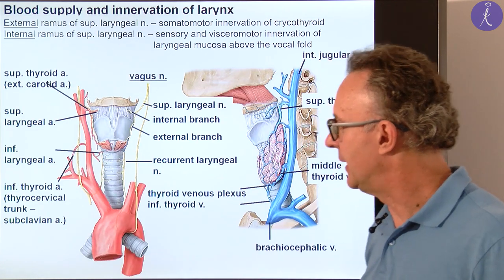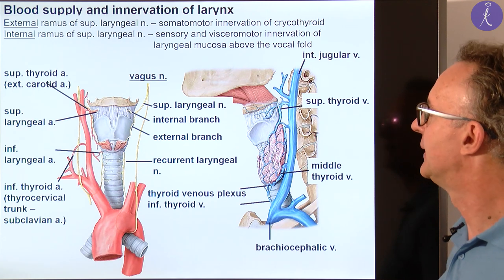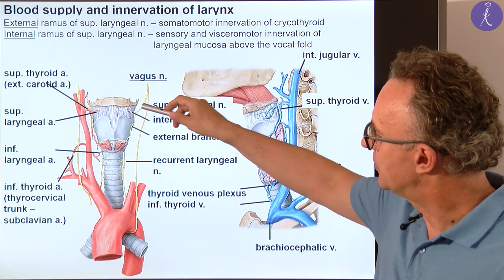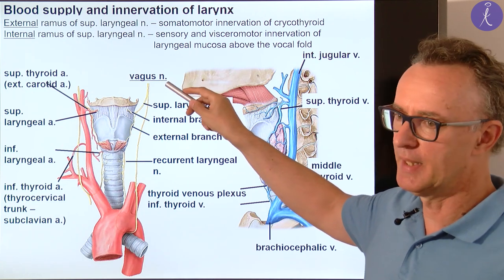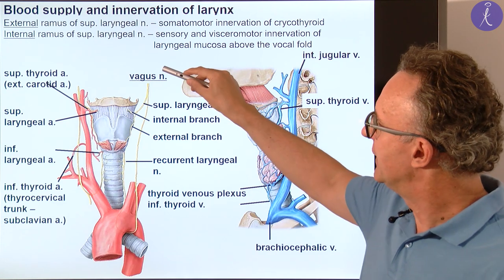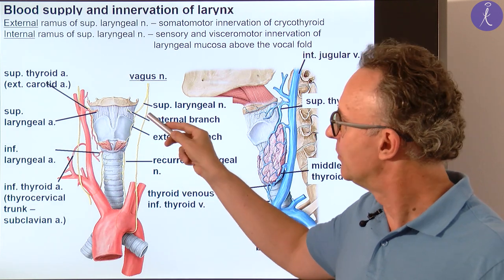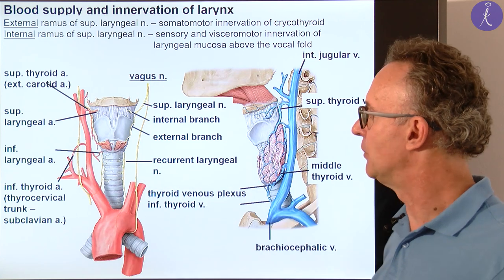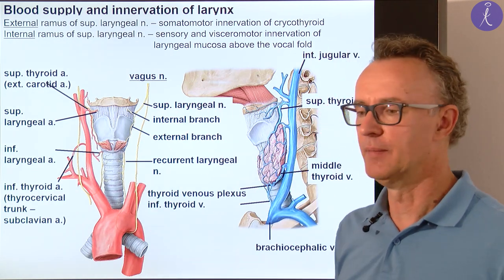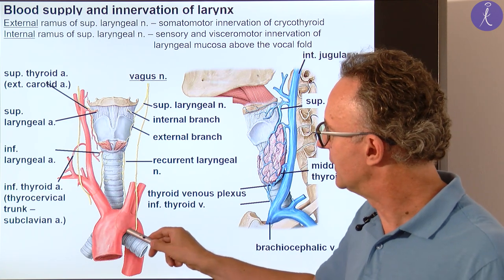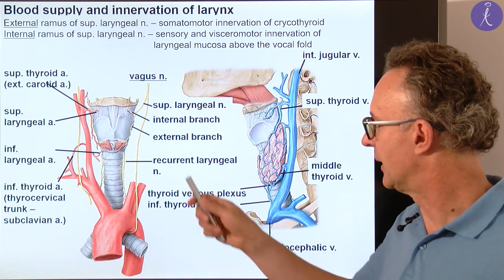Next is the blood supply and innervation of the larynx — usually dual. Regarding innervation, both the superior laryngeal nerve and the recurrent laryngeal nerve — which is called the inferior laryngeal nerve at its end — are branches of the vagus nerve, cranial nerve number 10. The superior laryngeal nerve innervates only the extrinsic muscle with its external branch. Its internal branch passes through the small hole on the thyrohyoid membrane and innervates the mucous membrane of the larynx above the vocal fold. The rest of the muscles — the intrinsic muscles of the larynx — are innervated by the recurrent laryngeal nerve, which also innervates the mucous membrane below the vocal ligament.